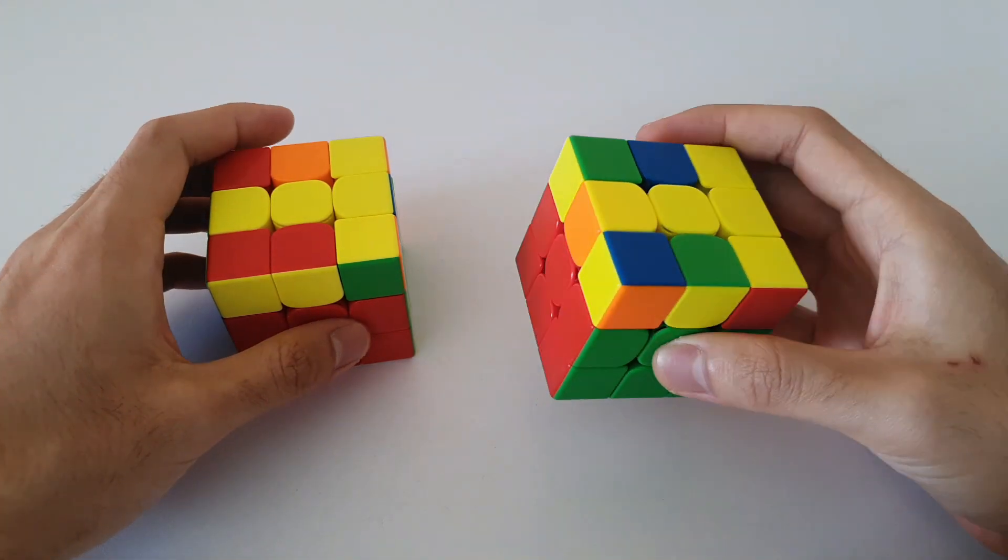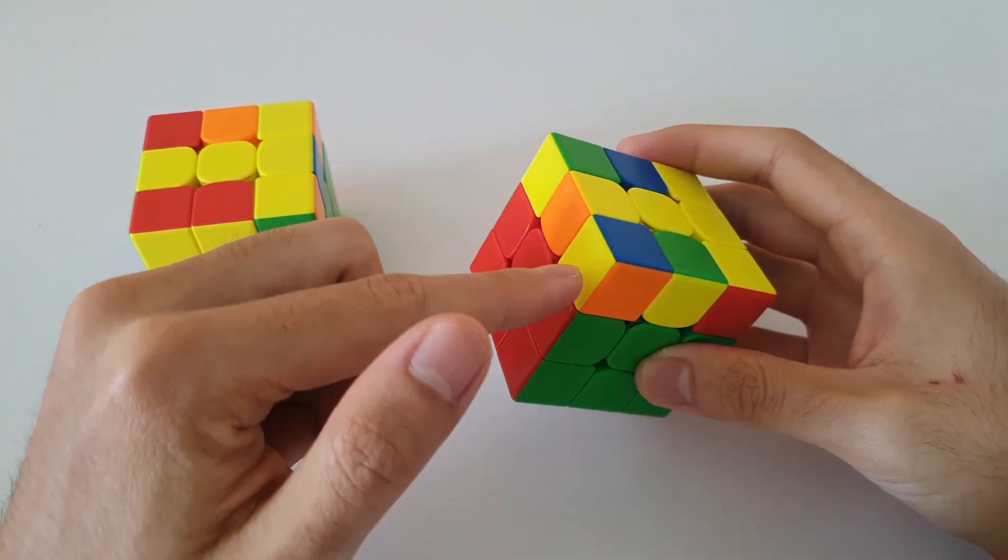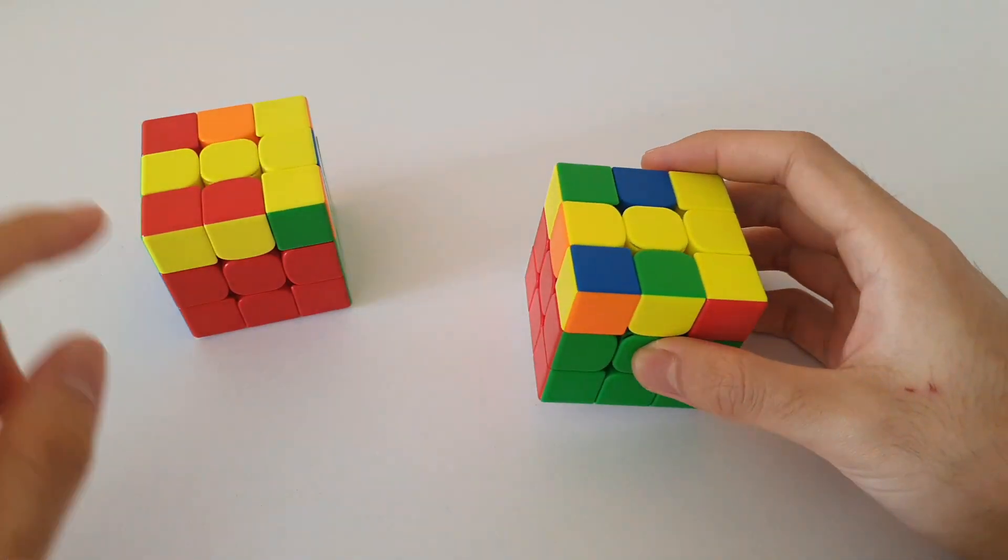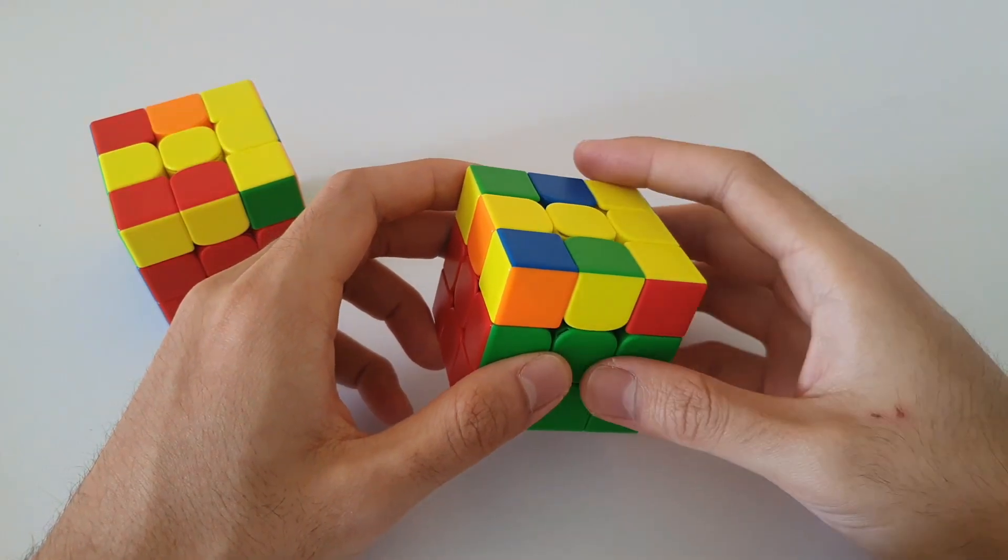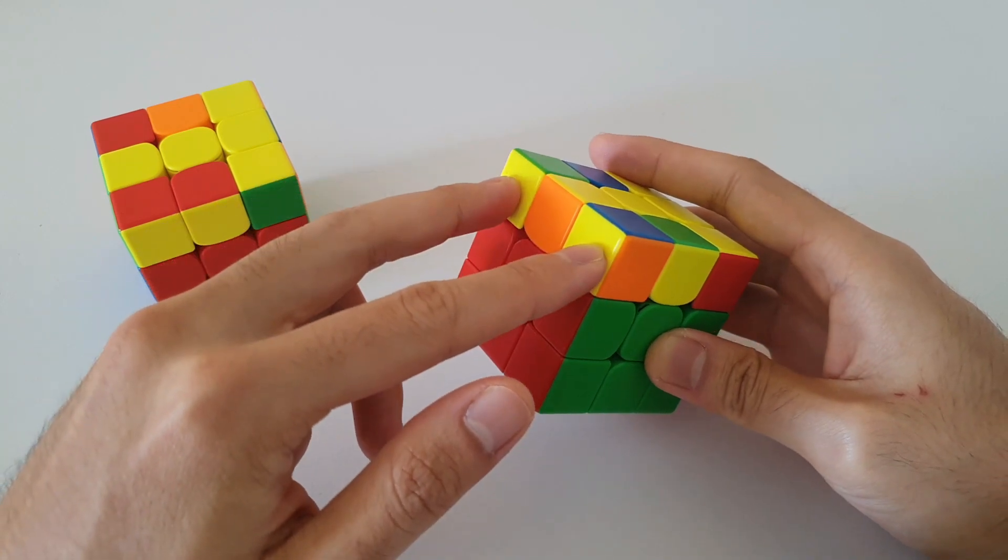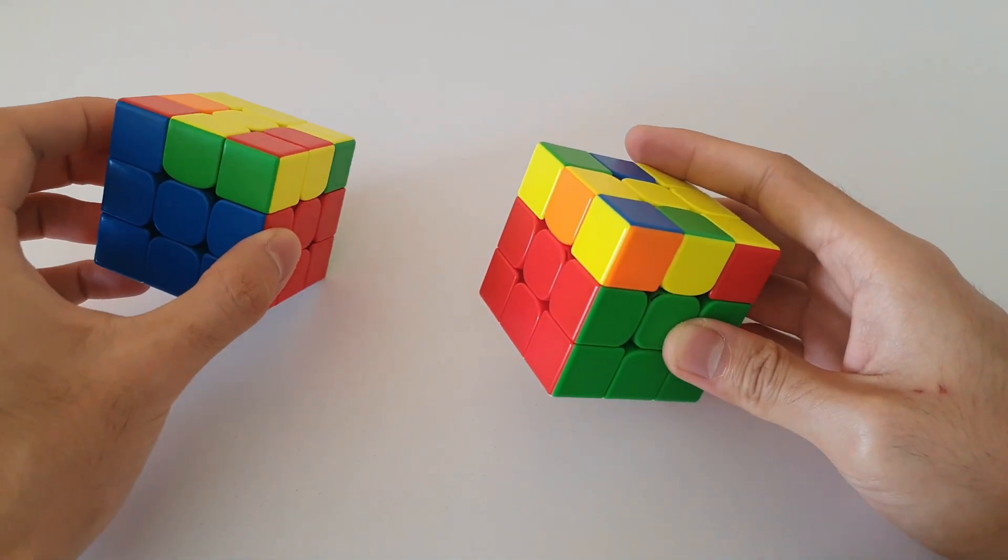The first T case I want to talk about is this one here. It is recognized by the yellow stickers around the side being kind of spread out. As you can see, they're not attached to each other like in this case. Another way to recognize it is the headlights over here on the left side. So headlights would just be pairs of matching corner colors. In this case, we do not have headlights on the left.